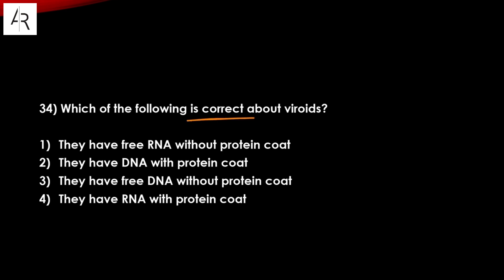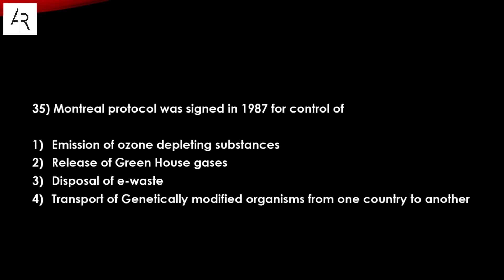Question number thirty-four: which of the following is correct about viroids? They have free RNA without a protein coat — option number one is the answer, as protein coat is absent and free RNA is present. Question number thirty-five: Montreal Protocol was signed in 1987 for the control of ozone — option number one is the answer.